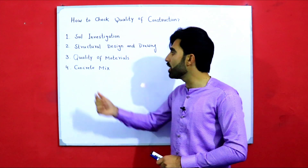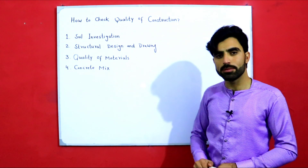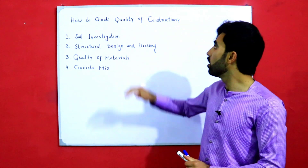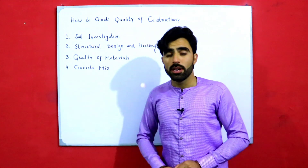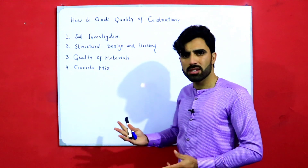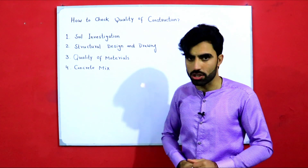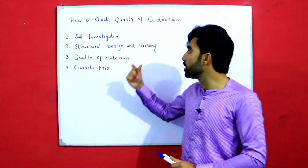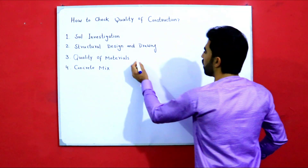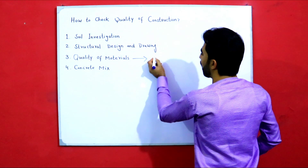The third point is quality of materials. As you know, quality of material is important for quality of construction. If you use normal materials that are not best quality, it can affect your construction. Therefore, quality of material should be checked. We have different quality of materials like steel, bricks, concrete, cement, sand, gravel, etc.